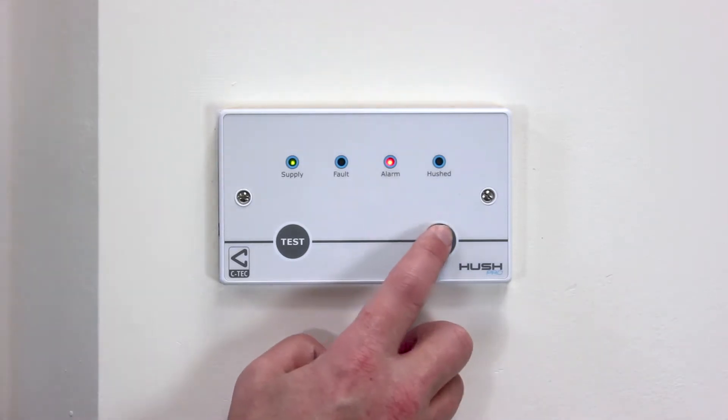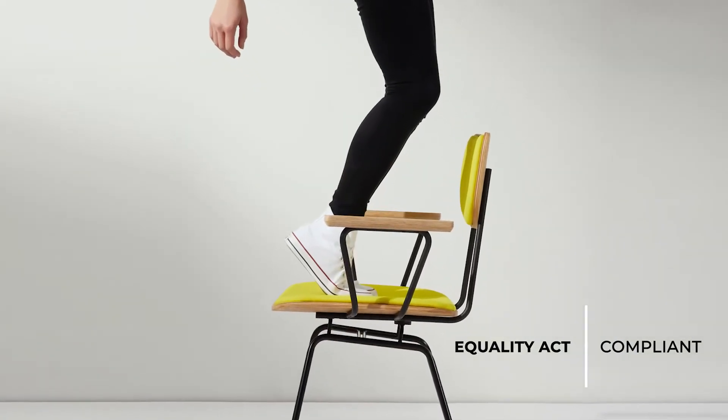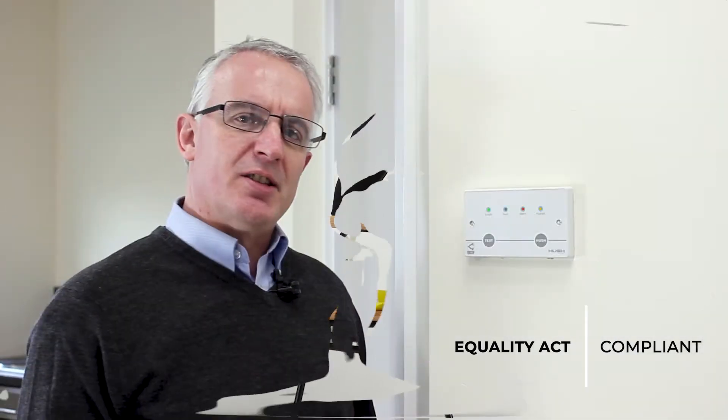As you can see, you can press the Hush button while standing at floor level without having to climb on a chair or a set of ladders. This means the system is safer and fully compliant with the Equality Act.